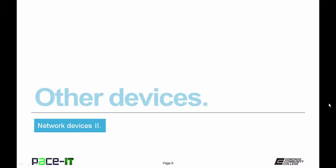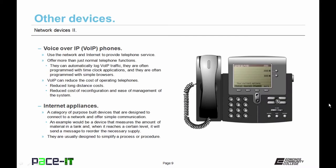Now let's move on to some other types of devices. First up is the voice-over IP phone, the VoIP phone. This uses the network and internet to provide phone service. The VoIP phone offers more than just normal telephone functions — it can automatically log traffic, they are often programmed with time clock applications, and they also often come programmed with a simple browser. VoIP can reduce the cost of operating a telephone system through reduced long-distance costs and also reduced cost and ease of management of the telephone system.